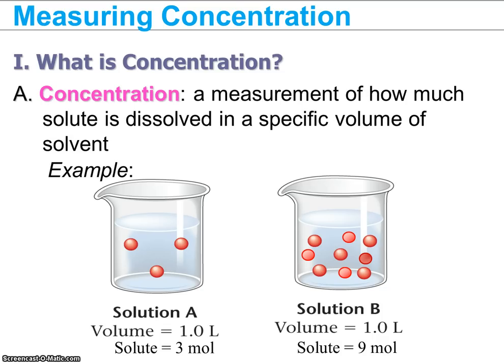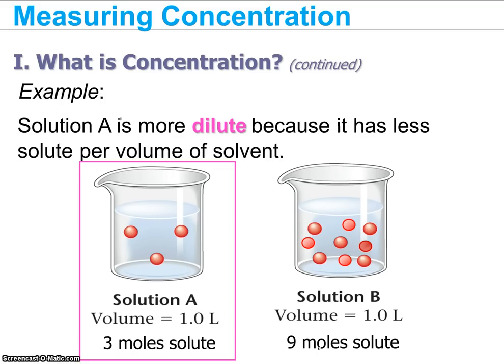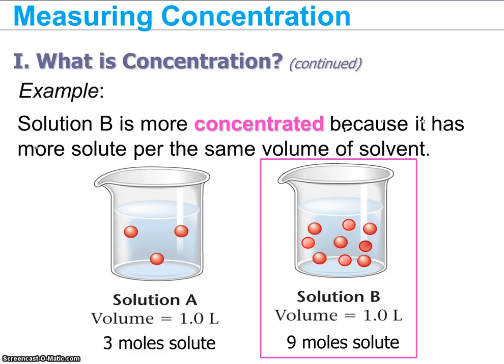Concentration is a quantitative measurement of how saturated a solution is. If you were to calculate concentration, it's based on the amount of solute that is dissolved in a specific volume of solvent. For example, here we have two different solutions, A and B. They both are made of one liter of solvent. However, one has three moles and one has nine moles. Solution A with only three moles is the dilute solution — less concentrated — because it has fewer moles of solute per volume. Solution B is more concentrated because it has more moles of solute per volume.